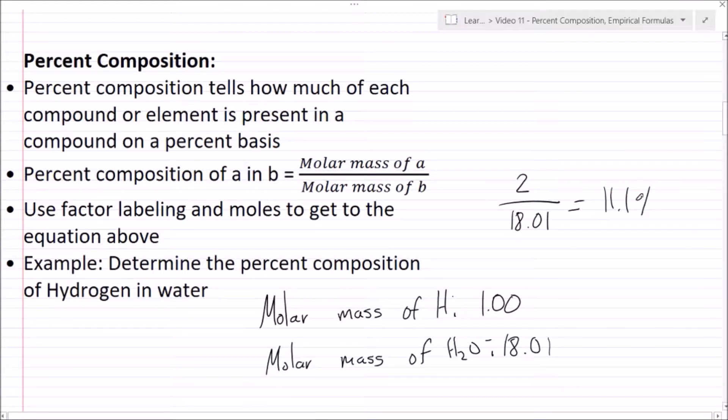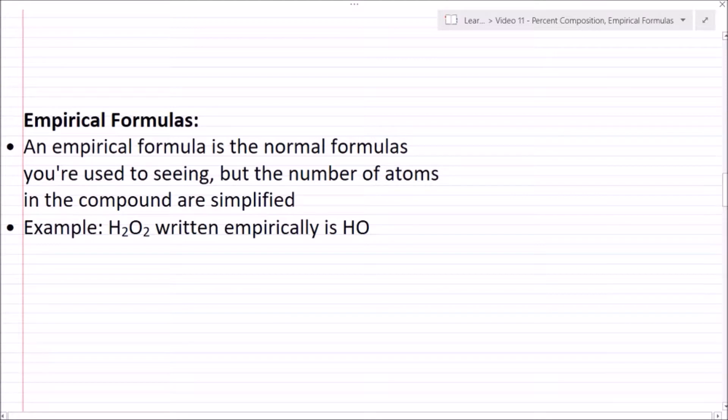Let's talk about empirical formulas now. An empirical formula is the normal formula you're used to seeing, but the number of atoms in the compound are simplified. For example, H2O2 - we can factor out a 2 and this can be written empirically as HO. So that's all an empirical formula is.